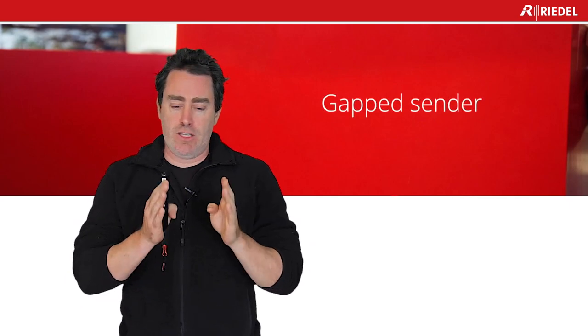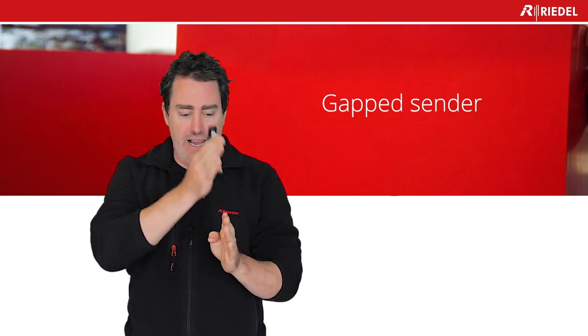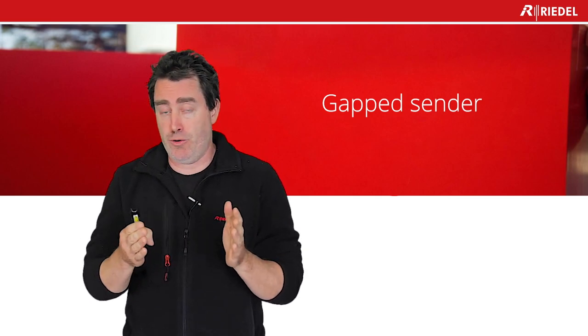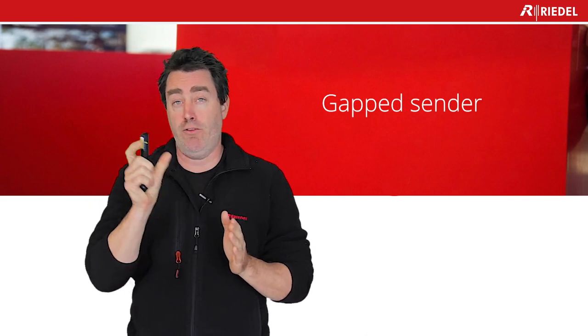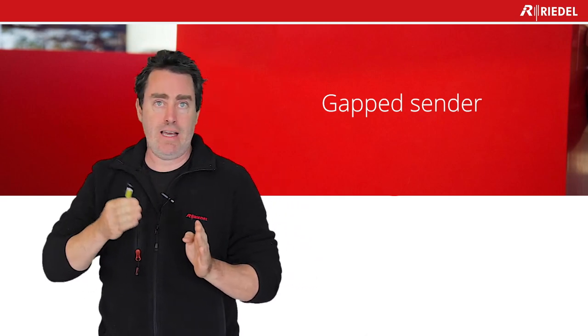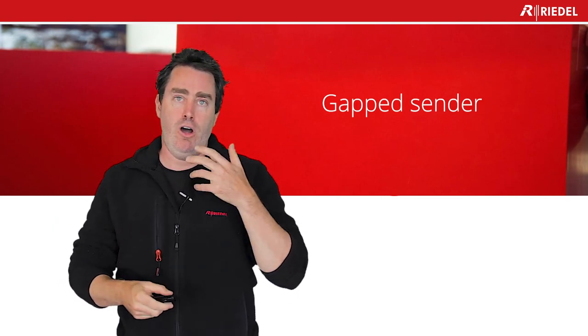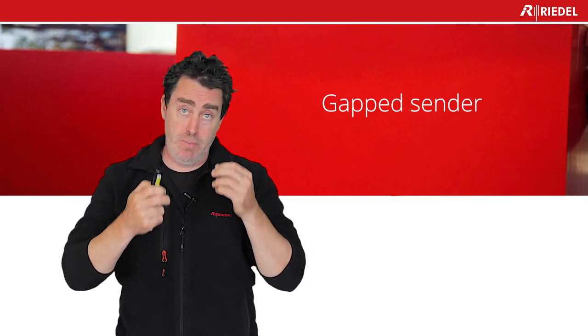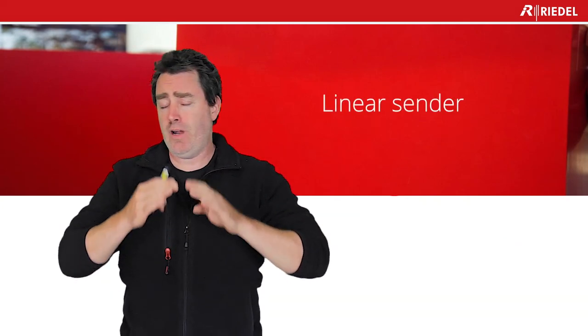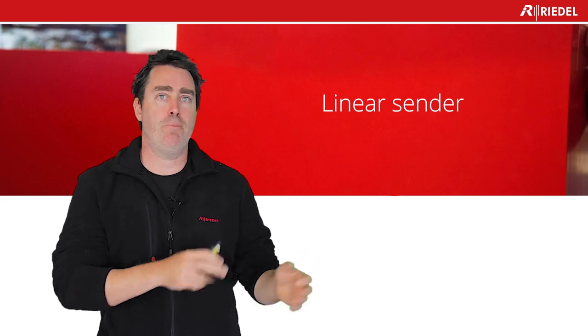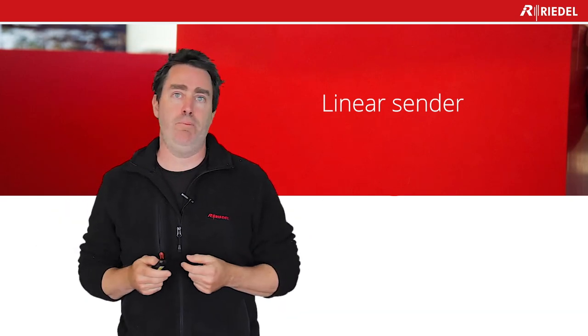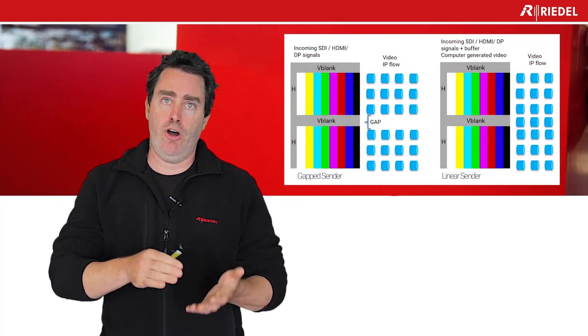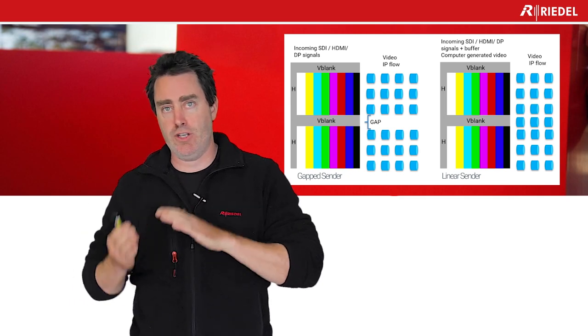A gapped sender is aware of the blanking interval. Basically, it sends packets when there is an active picture, and in 2110 it stops during the blanking, so there is a big gap, and then it starts again with the next line. Gapped senders are VBI and horizontal blanking interval aware, meaning they will stop. The linear sender, on the other hand, is like a computer — it has no knowledge of blanking because blanking is not needed in a computer world. So the gapped senders are typically the hardware ones and the linear senders are the software ones.